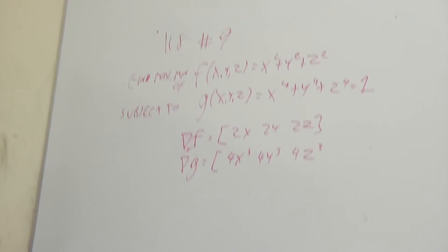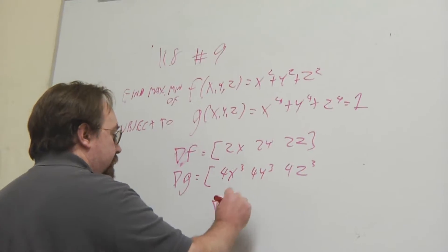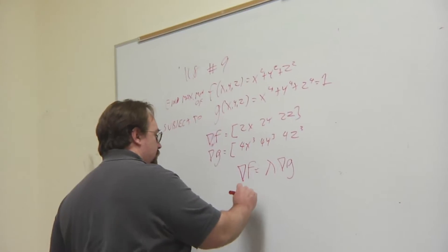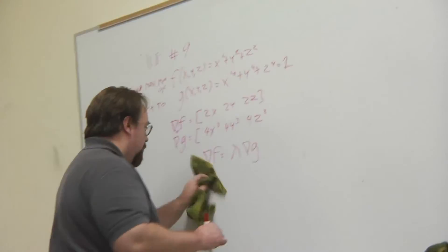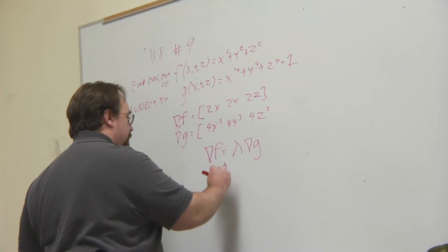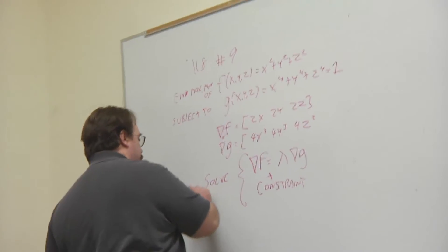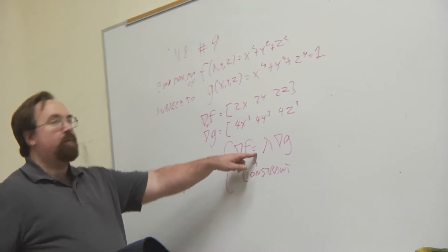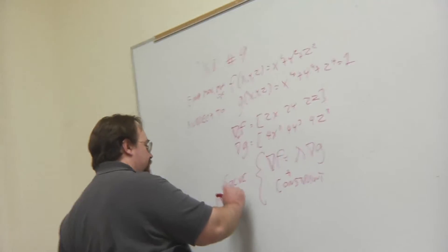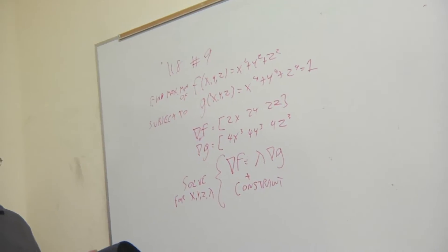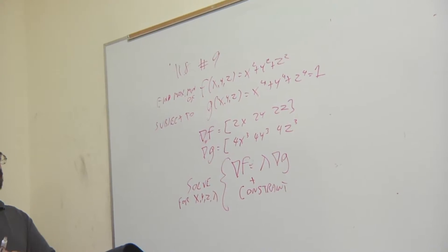And then you need to set up the system gradient of f is equal to lambda gradient of g. And also, you have to add in the constraint. So, you have to solve this system. Here it will be 3 equations, here it will be 1 equation. And you need to solve it for x, y, z, and lambda. So, if it's a function of 3 variables and 1 constraint, that's a total of 4 equations to solve.